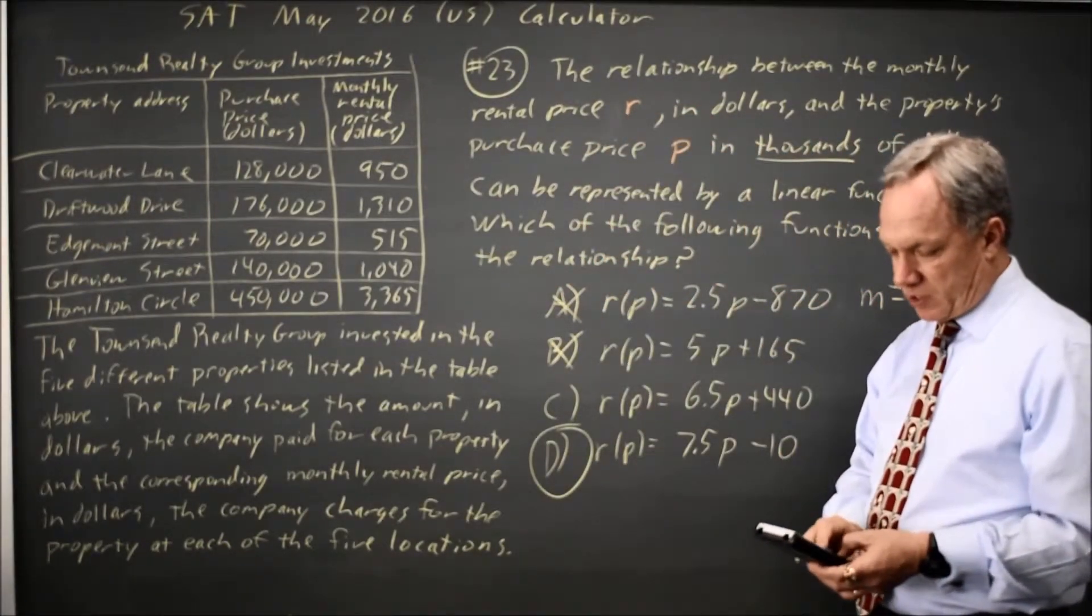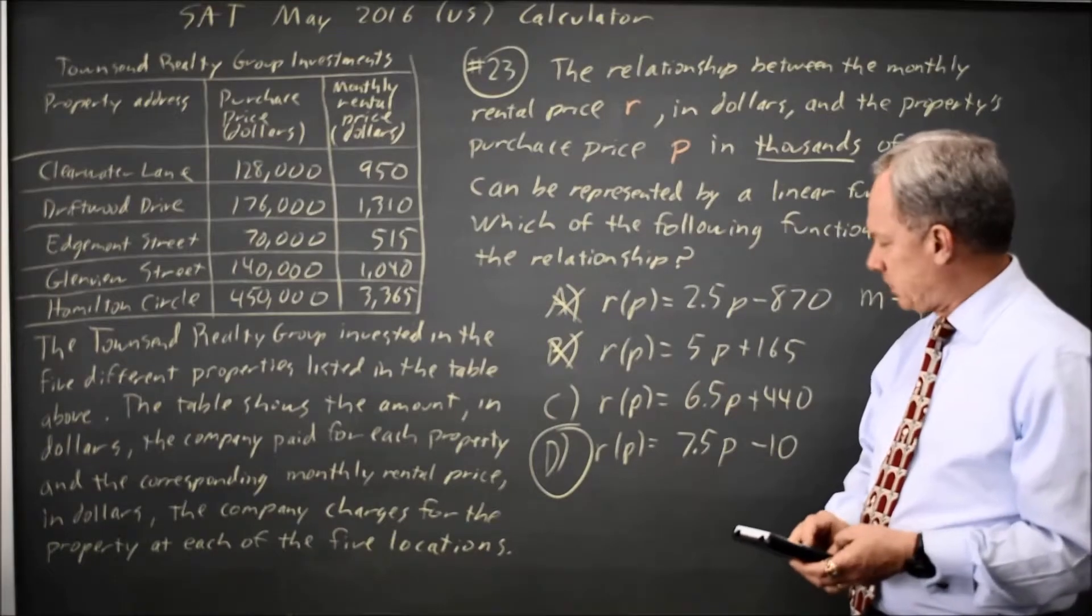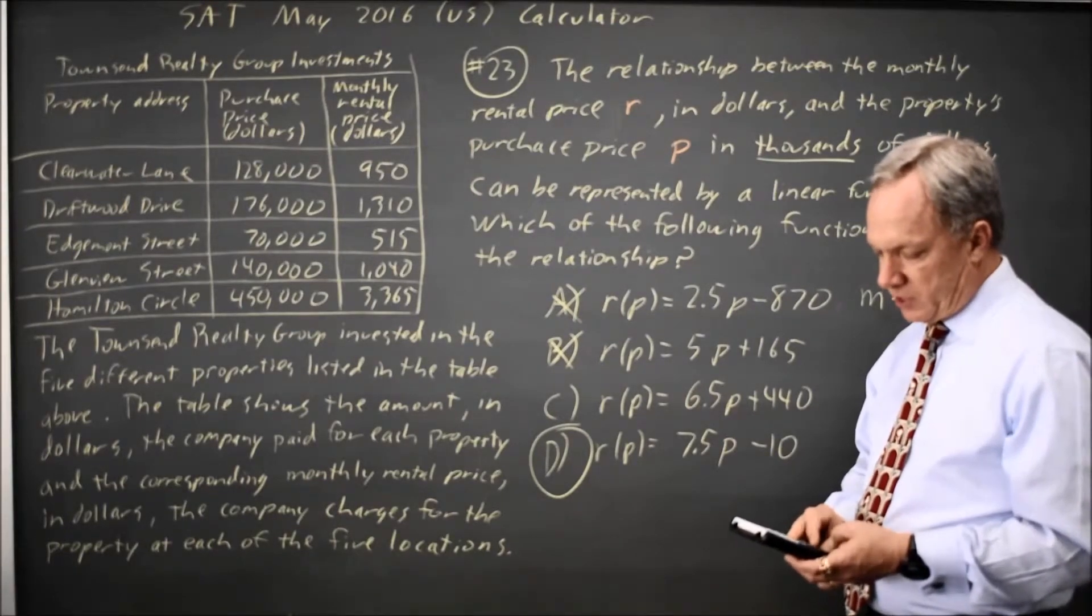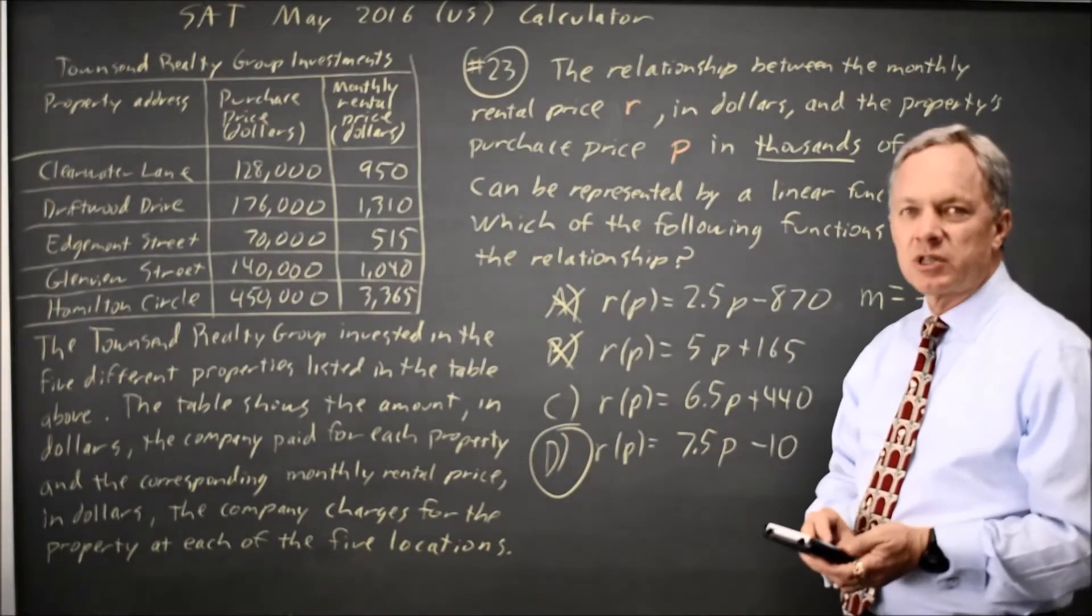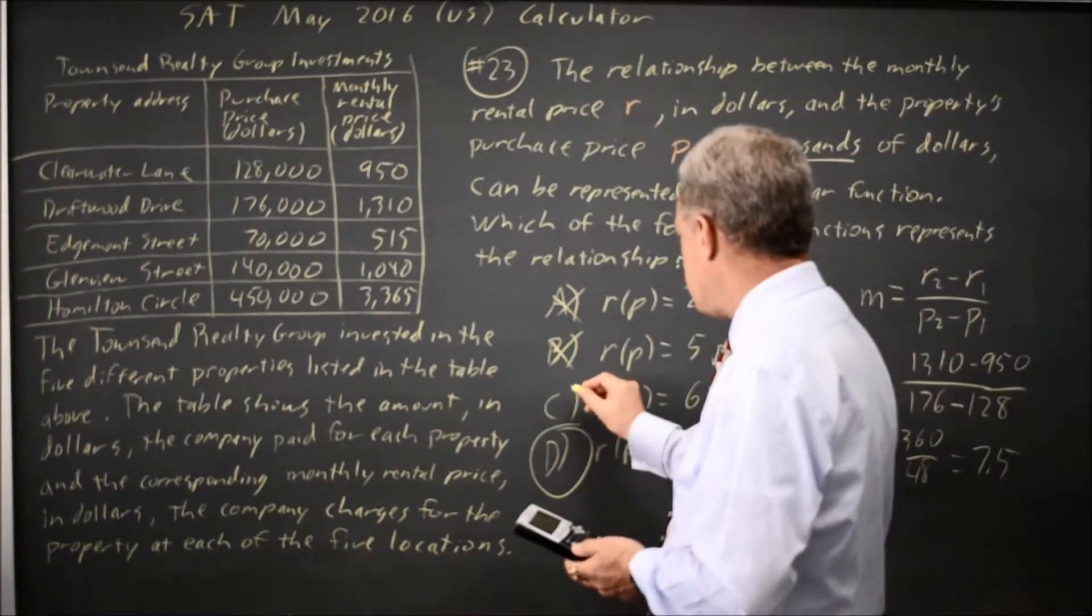Let's try C. 6.5 times 450 plus 440 and that gives me 2965 which is also not 3365, so C is wrong.